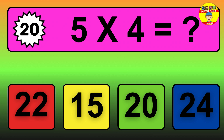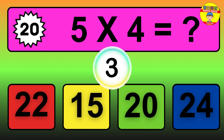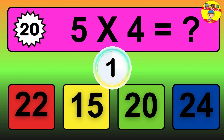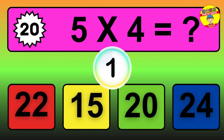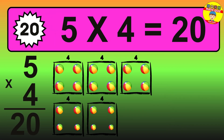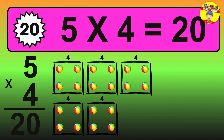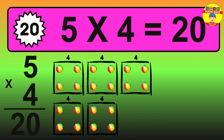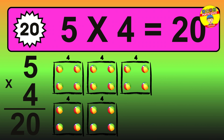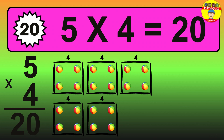Question 20. 5 times 4 equals what? The answer is 5 times 4 is 20. To calculate, we have 5 groups with 4 balls each one. So, how many balls do we have? 20 balls.